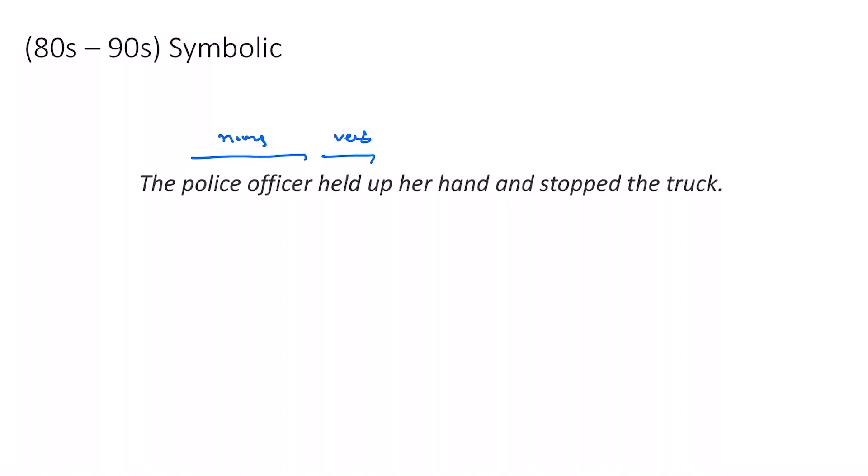For example in this case we need to know that truck has drivers, people obey police officers, trucks have brakes that will cause them to stop, drivers can step on the brake to stop the truck.